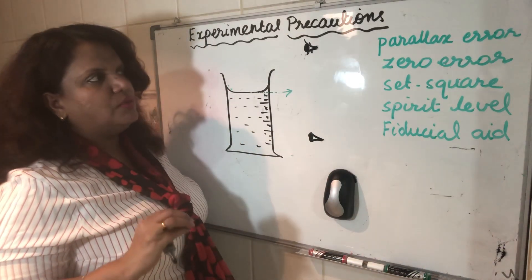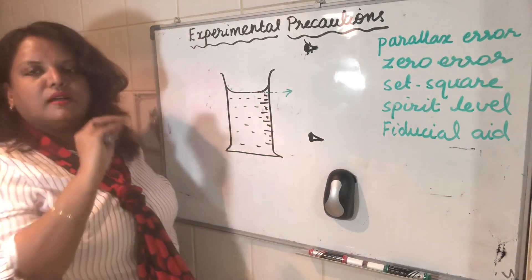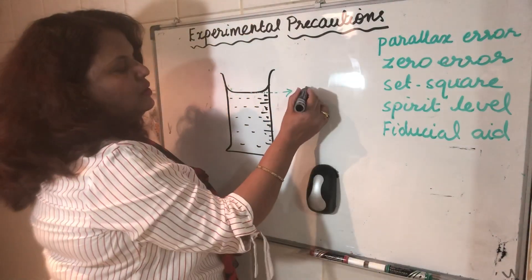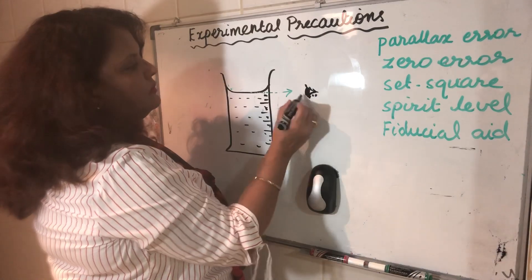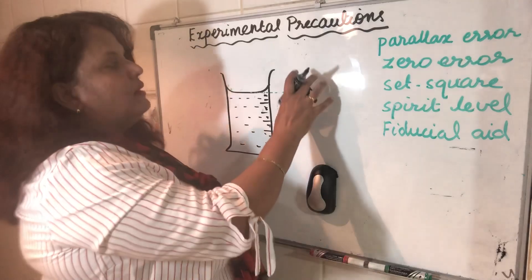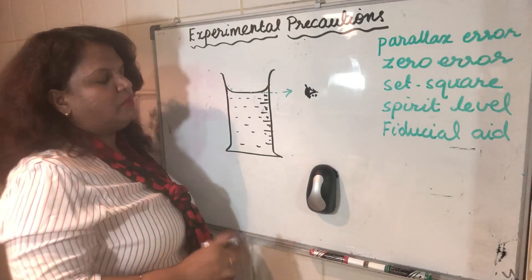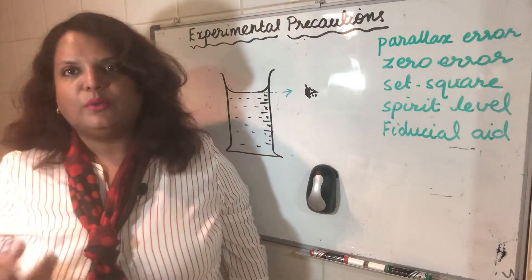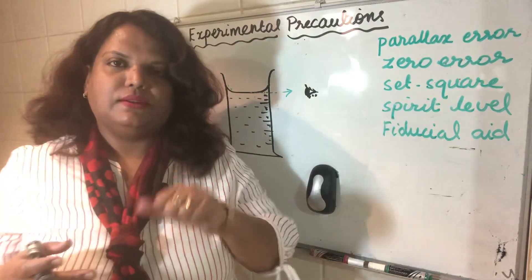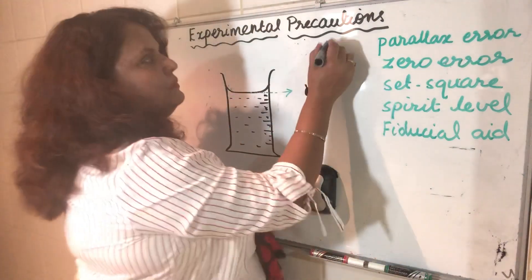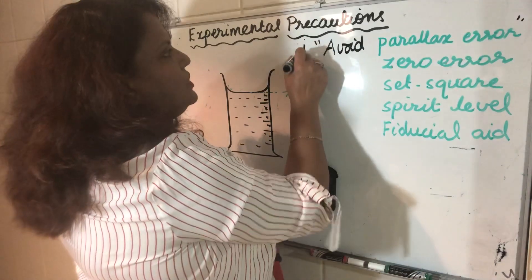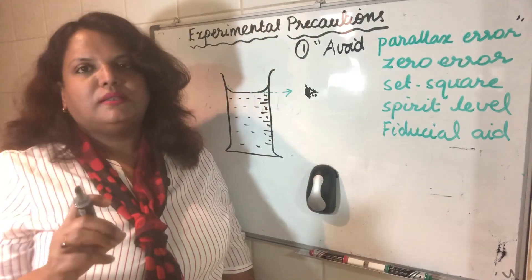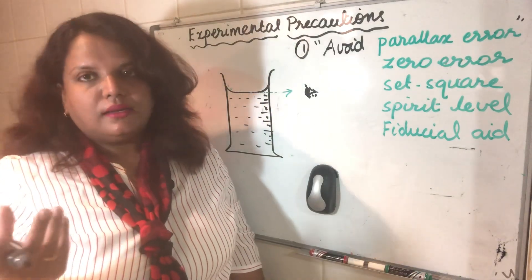Parallax error is the error that occurs due to the positioning of eye level. To take an accurate reading, your eye level should be in line with the reading you are taking. From an examination point of view, you write: 'Avoid parallax error.' This is a general precaution you can use in almost all experiments, because nearly every experiment involves an instrument where this applies.